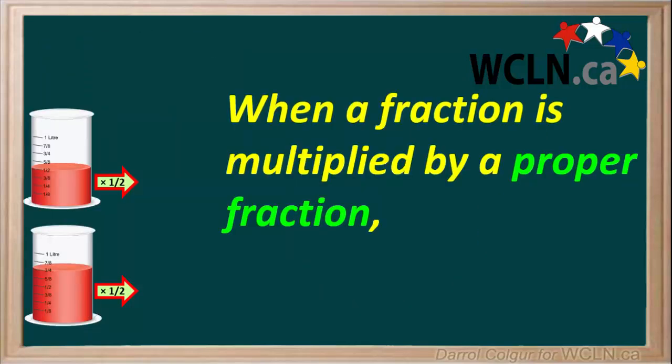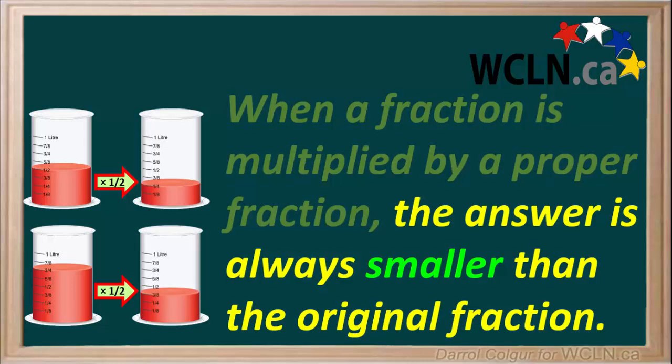We can summarize by stating that when a fraction is multiplied by a proper fraction, the answer is always smaller than the original fraction.